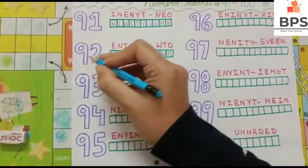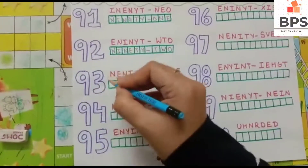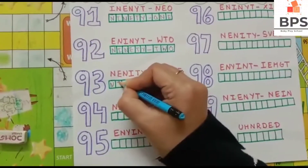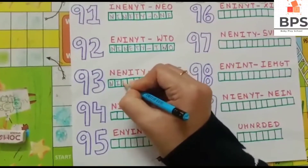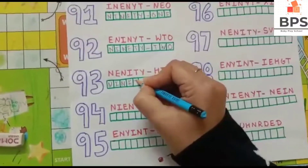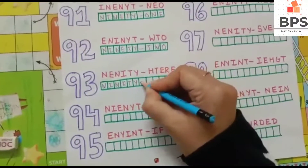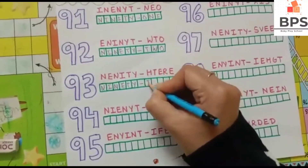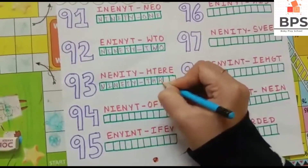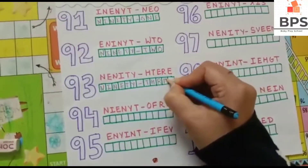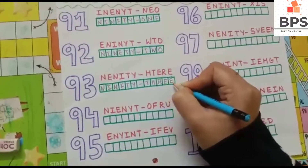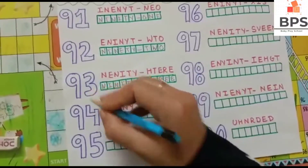9, 3, 93 — N-I-N-E-T-Y, 90, T-H-R-double-E, 3, so 93.